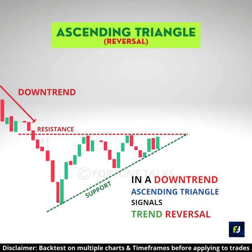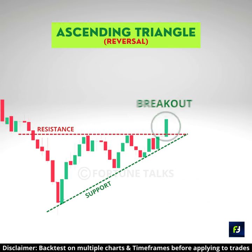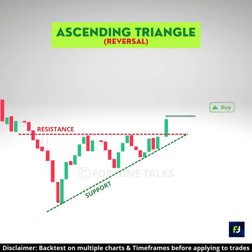If the market is in a downtrend before the ascending triangle pattern appears, this indicates a bullish reversal. When the price breaks above the resistance, it indicates that the upside momentum will probably continue.